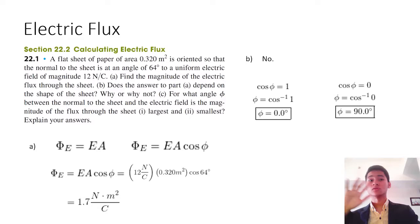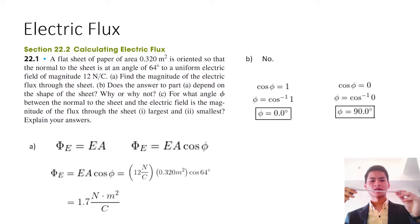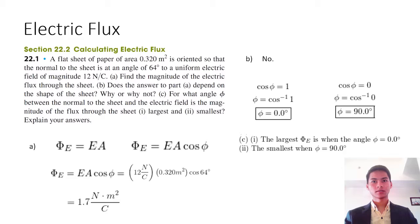If the angle is 90 degrees, you would get no flux at all. We define flux as flow — the field would not be penetrating the plane at all if angle phi is 90 degrees.